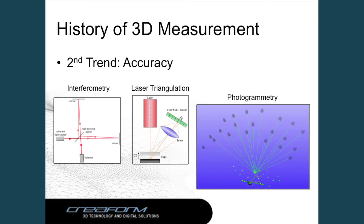The other trend is obviously accuracy, because a measurement needs to be accurate. There were different kinds of technologies that could provide accuracy — laser triangulation, which is pretty much the basic technology behind laser scanning. And there's also photogrammetry.